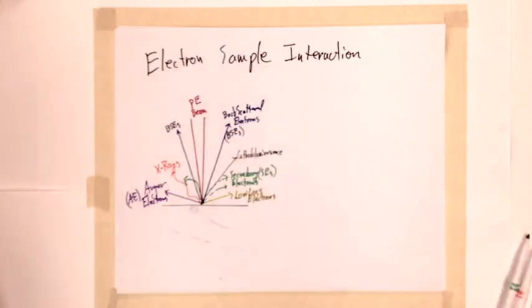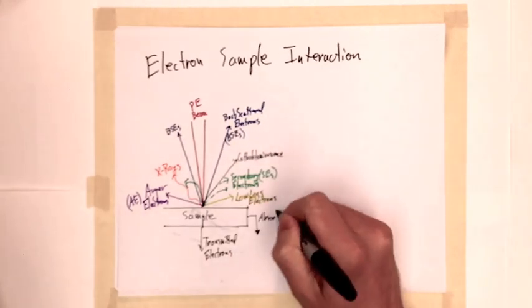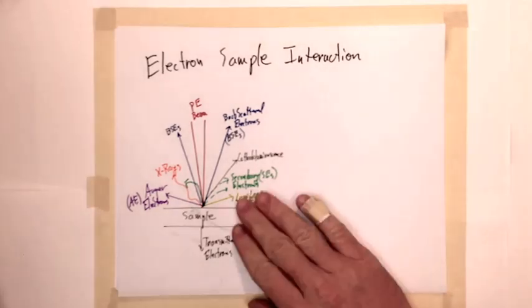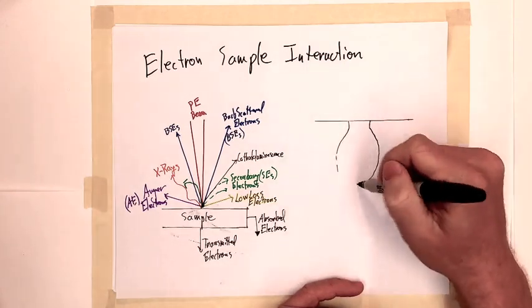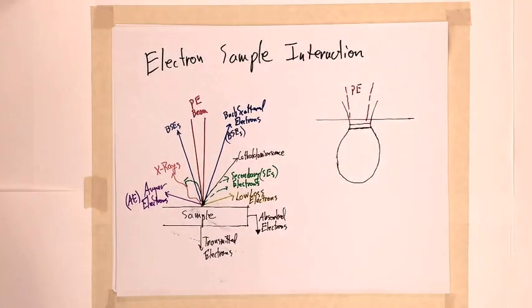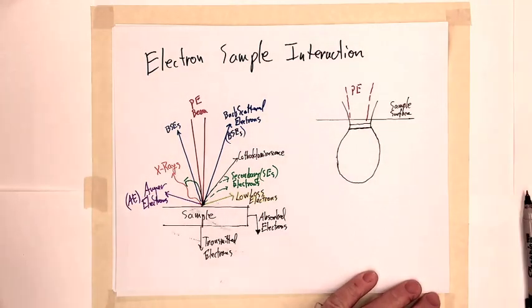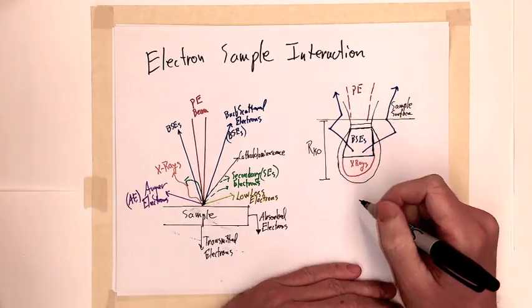But we will focus on backscattered electrons, which I might call BSEs for short. These signals arise through a number of scattering processes, making the total electron diffusion very difficult to calculate. However, the range of electron depth in the sample is generally proportional to the electron energy, atomic weight, density, and atomic number.